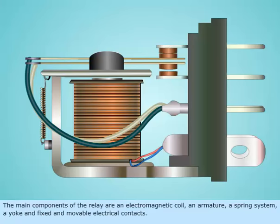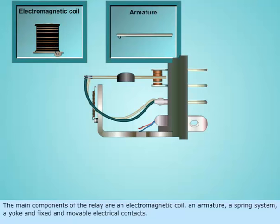The main components of the relay are an electromagnetic coil, an armature, a spring system, a yoke and fixed and movable electrical contacts.